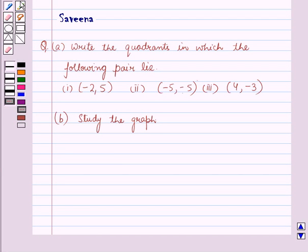Hello and welcome to the session. In this session, we will discuss a question which says that in Part A, write the coordinates in which the following pairs lie. The first subpart is the ordered pair minus 2, 5. The second subpart is the ordered pair minus 5, minus 5. And the third subpart is the ordered pair 4, minus 3.